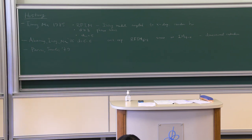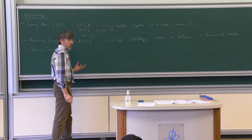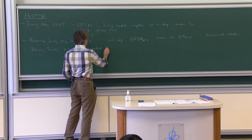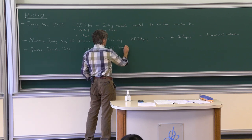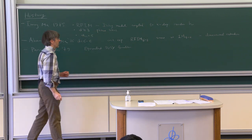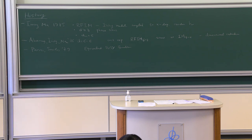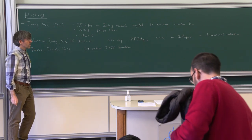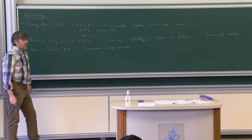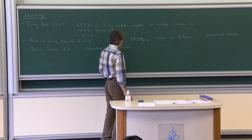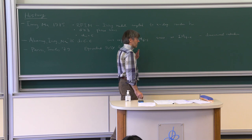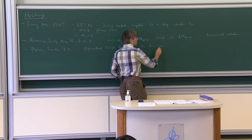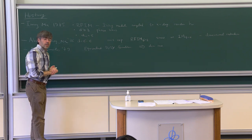Parisi and Sourlas showed that the random field Ising model has an equivalent supersymmetric formulation. Supersymmetry at the time was and still is a hot topic in particle physics, but this was perhaps one of the first appearances of supersymmetry in statistical physics. It was a weird kind of supersymmetry, not the kind that high-energy physicists are used to. Their discovery was that this supersymmetry naturally implies dimensional reduction — it's no longer mysterious that the Feynman integrals are the same.